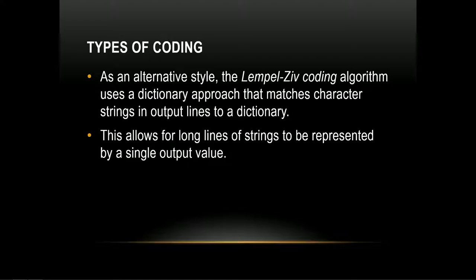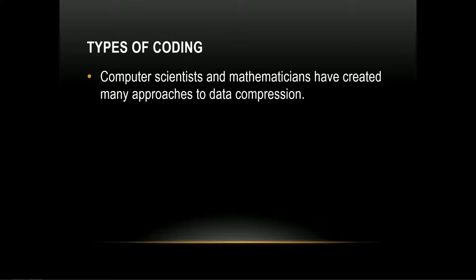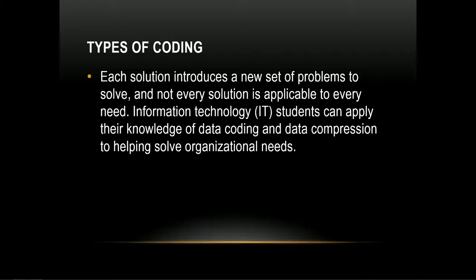An alternative style is another type of coding using a dictionary approach, allowing long strings to be represented by a single output value. That way, predefined larger strings of data correspond to another value. There are numerous approaches that mathematicians, data scientists, and computer scientists have created to help increase the efficiency of our data compression.